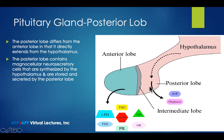In reviewing the posterior lobe — here is the posterior lobe. It's in direct communication with the hypothalamus. It contains magnocellular neurosecretory cells that are synthesized by the hypothalamus and then stored in the posterior lobe.